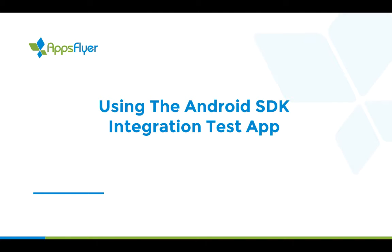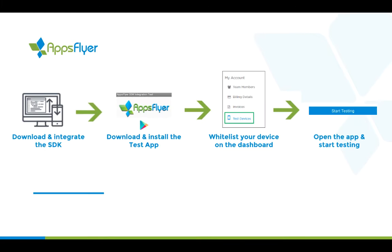AppsFlyer provides you with a simple tool that enables you to test the integration of your app with our Android SDK. Using the Android SDK integration test app, you can track integration issues in your project and perform an automated click install test that shows a non-organic install on your dashboard, both before and after publishing your app in the store.